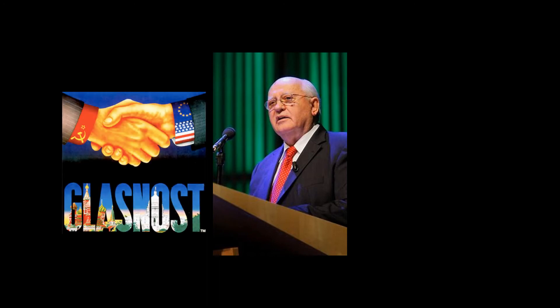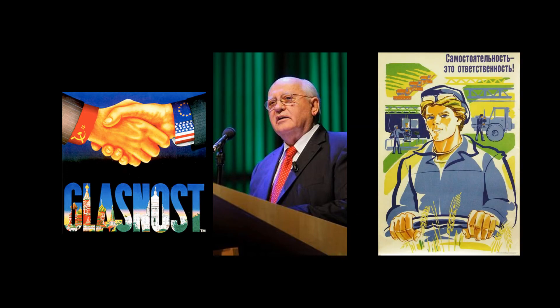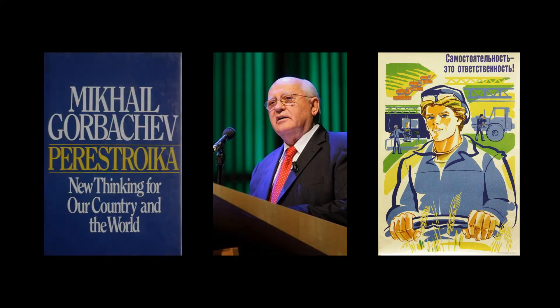When Gorbachev assumed the reins of power in the Soviet Union, no one predicted the revolution he would bring. A dedicated reformer, Gorbachev introduced the policies of glasnost and perestroika. Glasnost, or openness, meant a greater willingness on the part of Soviet officials to allow Western ideas and goods into the USSR. Perestroika was an initiative that allowed limited market incentives to Soviet citizens. Prior to this time, the USSR had strictly prohibited liberal reform and maintained an inefficient command economy in which the government controlled and regulated production, distribution, and prices. Gorbachev hoped these changes would be enough to spark the sluggish Soviet economy.